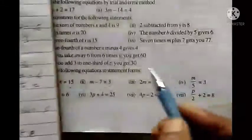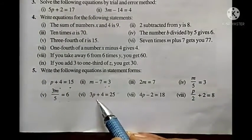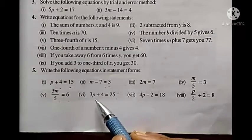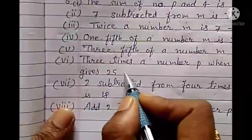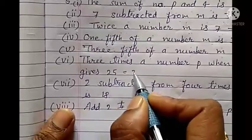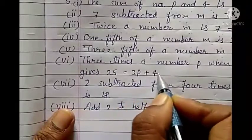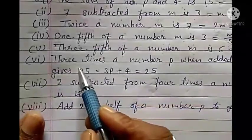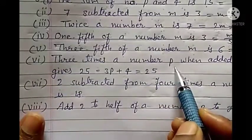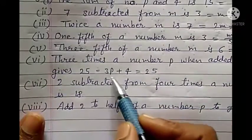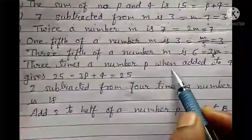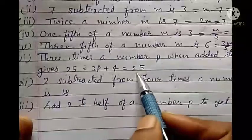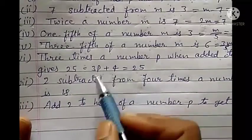Sixth: 3p plus 4 equals to 25. Three p means three times a number p. When added to 4, gives 25. Statement: three times a number p, when added to 4, gives 25.